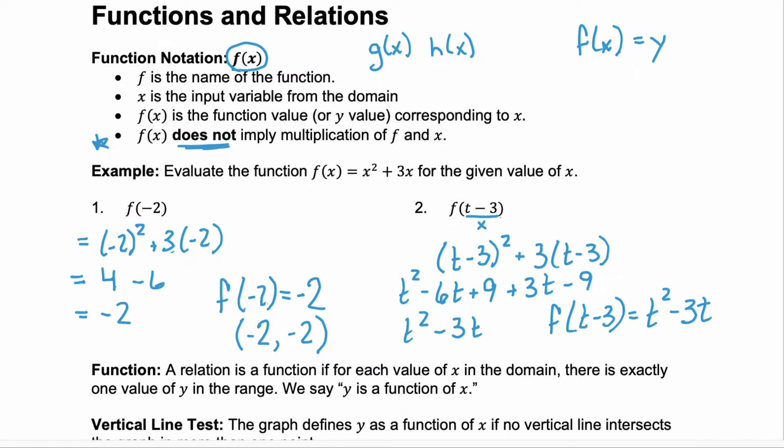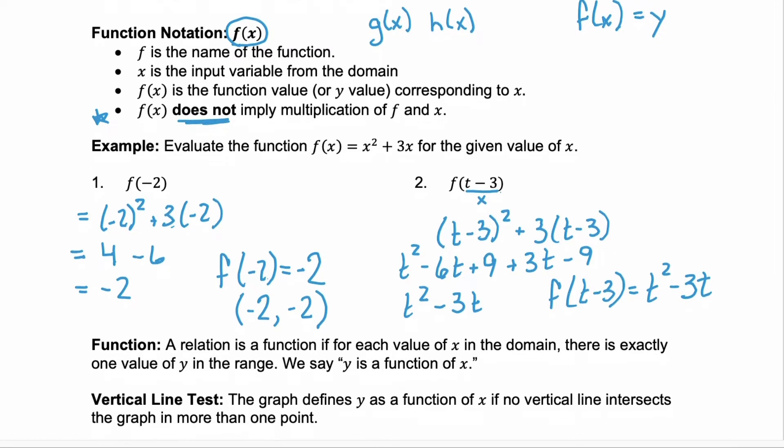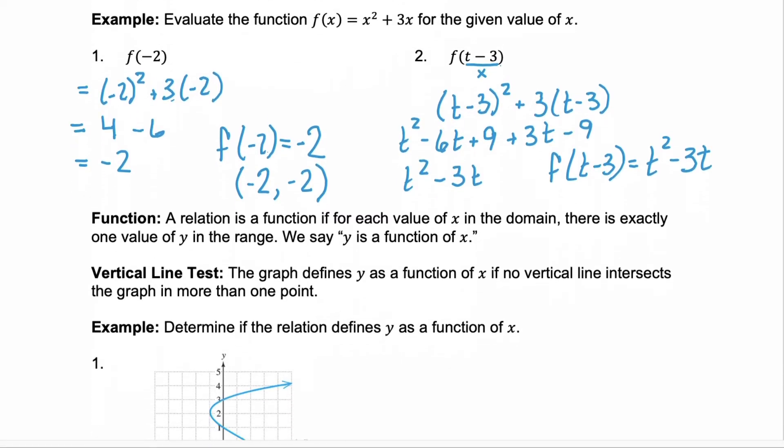So f of t minus 3 is equal to t squared minus 3t. Notice we didn't do anything special with that t minus 3 in the function notation — it's just telling us what input we put into the function.